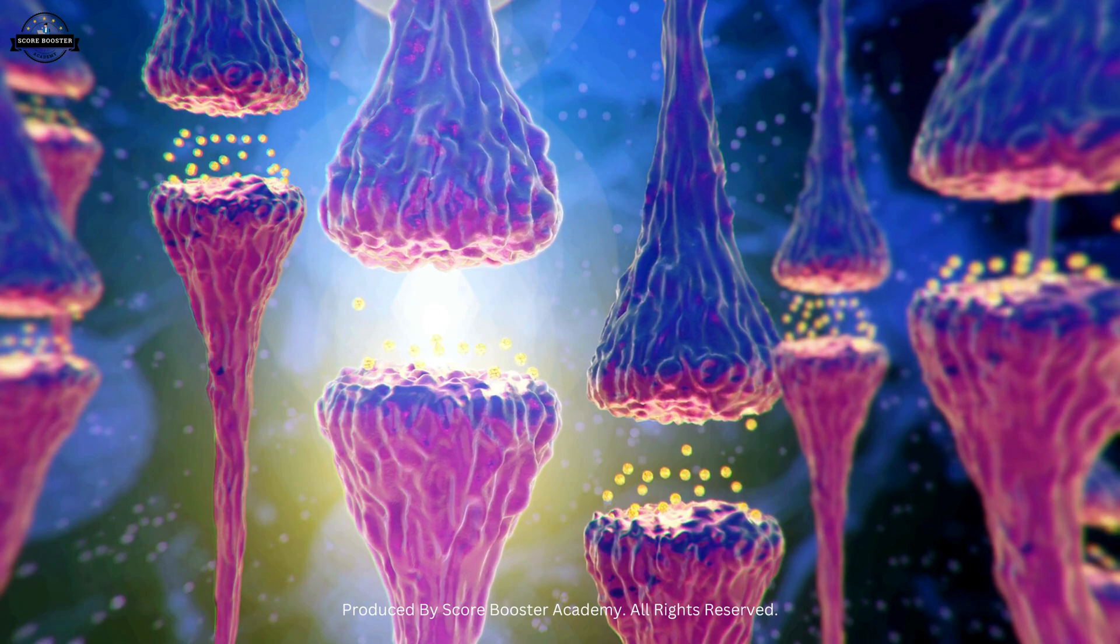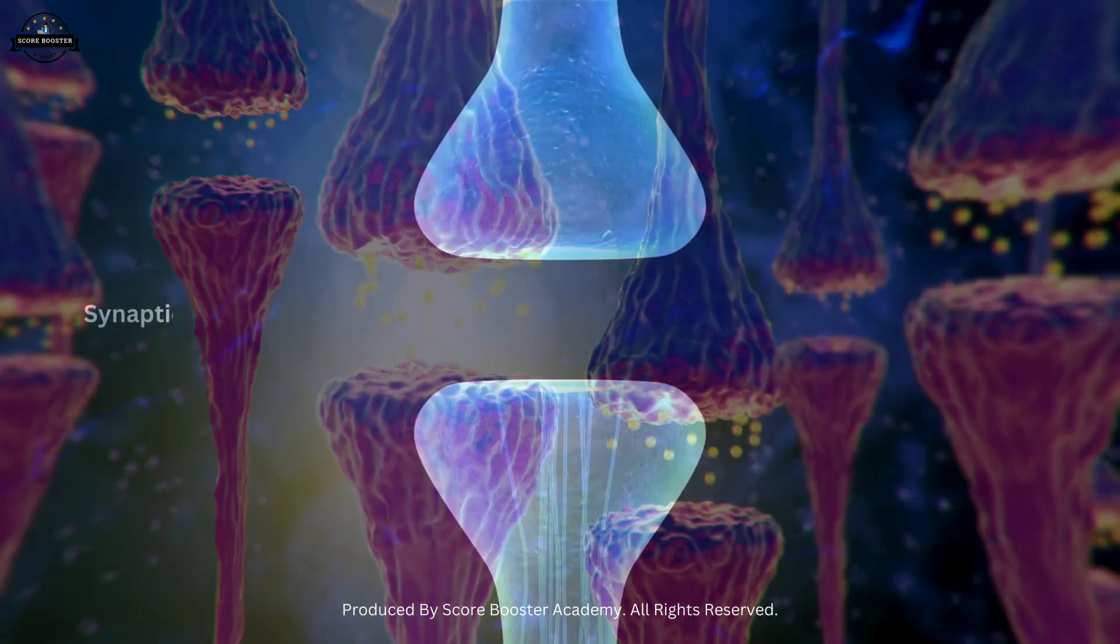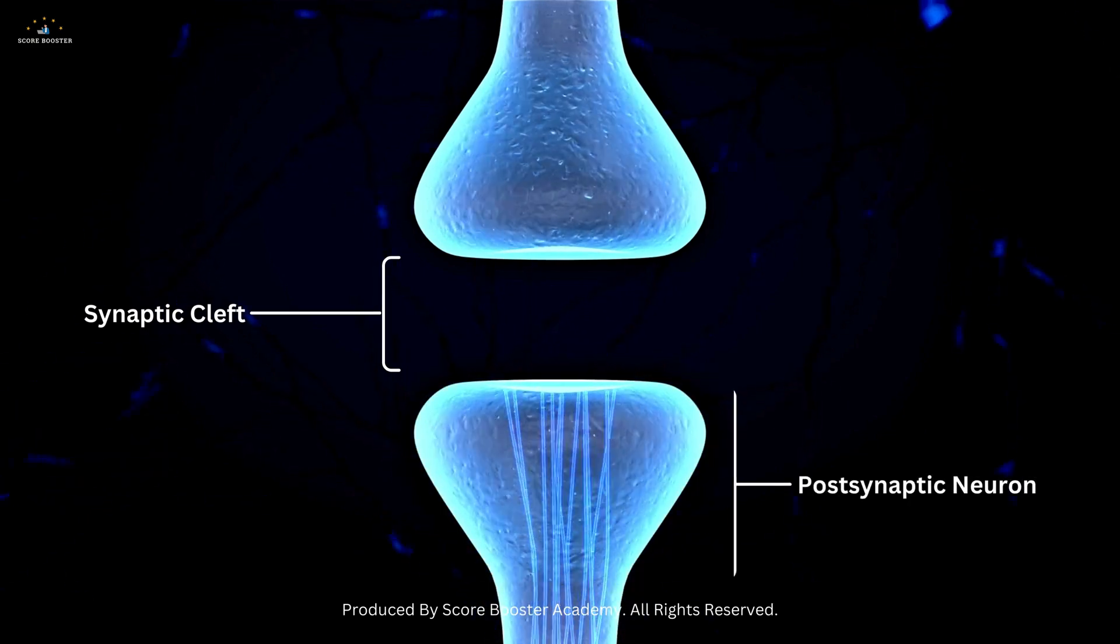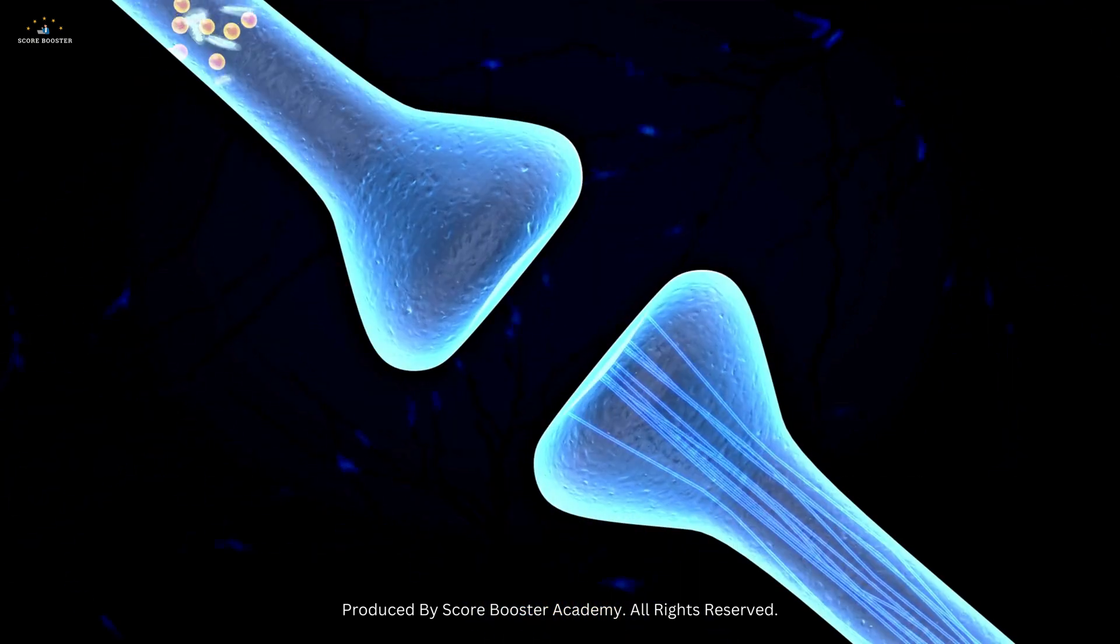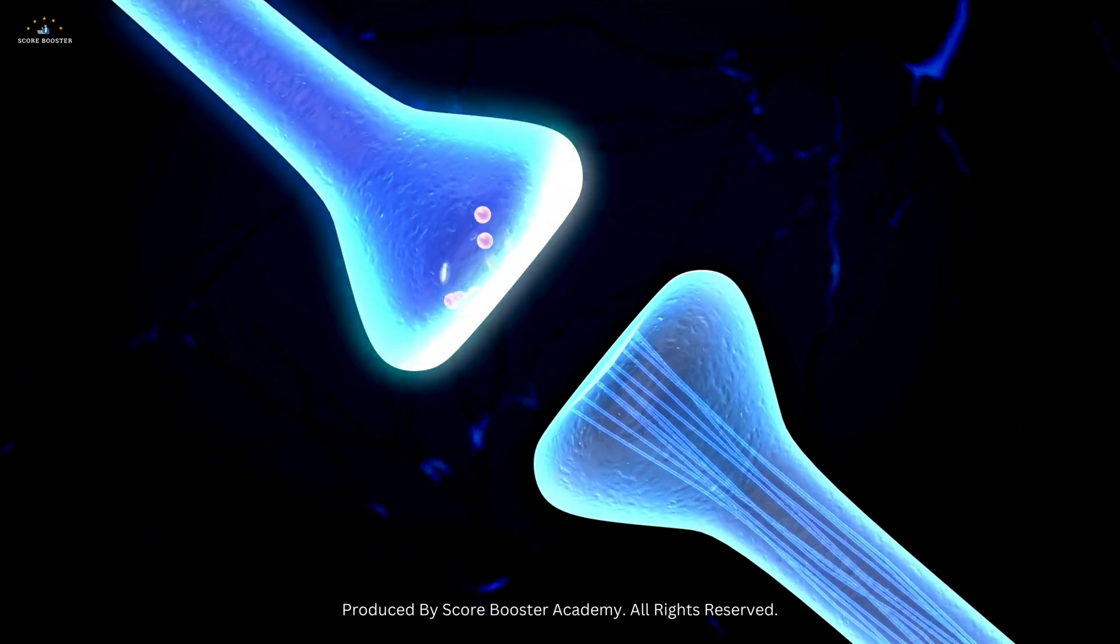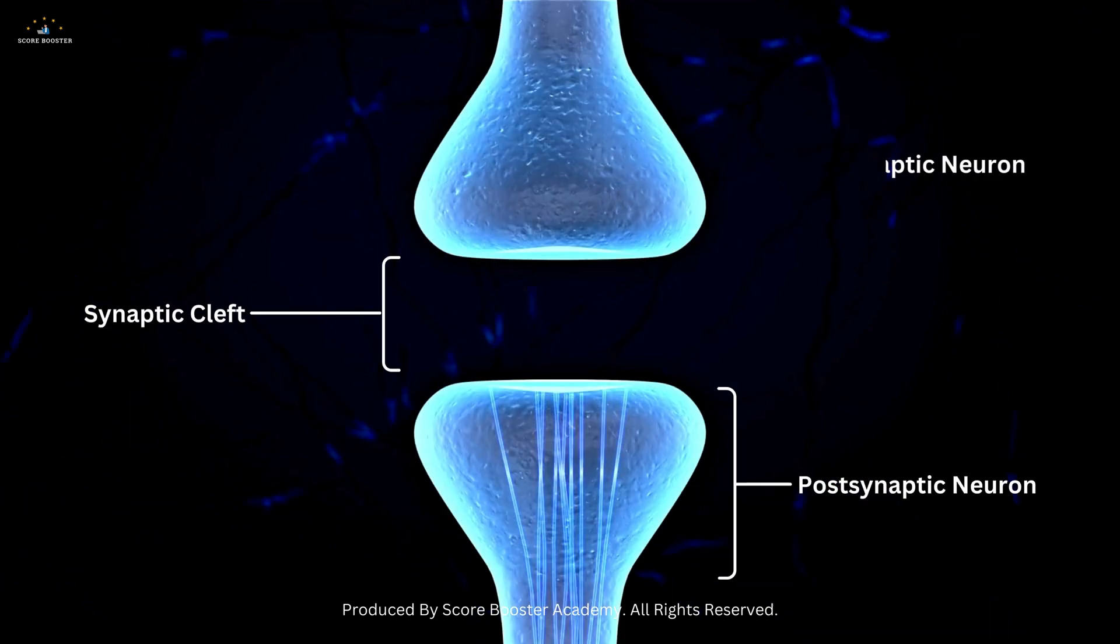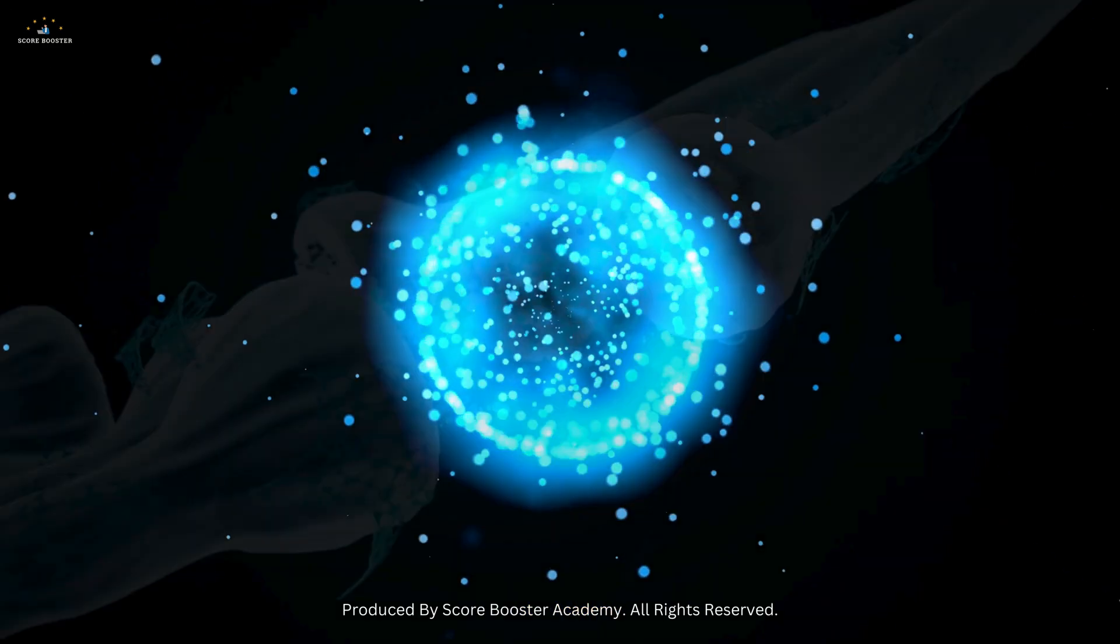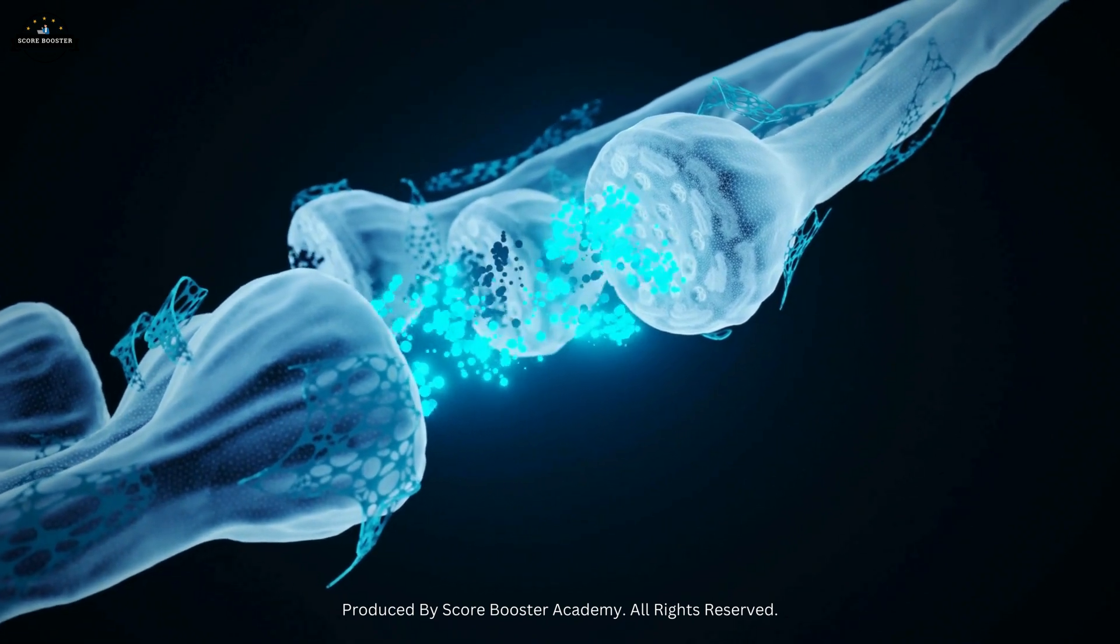After the neurotransmitters have done their job, they must be cleared from the synaptic cleft to prevent continuous stimulation of the post-synaptic neuron. This clearance can happen in several ways. Neurotransmitters can be taken back up by the pre-synaptic neuron in a process called reuptake, broken down by enzymes, or diffuse away from the synaptic cleft.